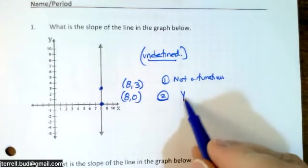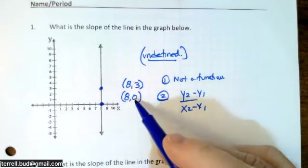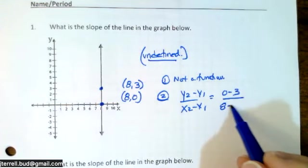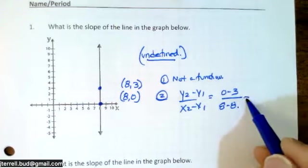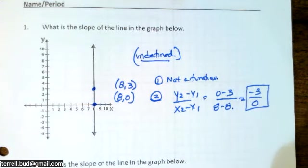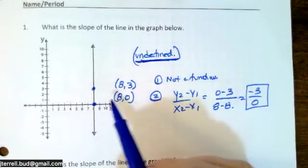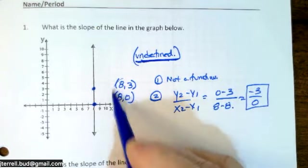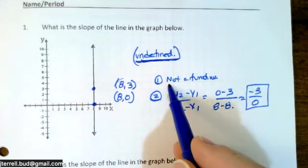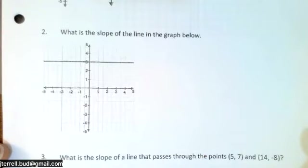You can also find the slope using y₂ minus y₁ over x₂ minus x₁. The difference in y's is 0 minus 3, and the difference in x's is 8 minus 8, giving negative 3 over 0. If you put that in your calculator you actually get an error message. So if you can't remember 'undefined,' go back to basics — use rise and run or the slope formula — and you'll find the slope is undefined.